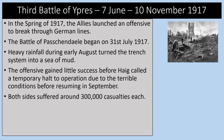The Third Battle of Ypres was from June to November 1917. In the spring of 1917 the Allies launched an offensive to break through German lines, and the Battle of Passchendaele began on the 31st of July 1917. The aim was to take the Germans from the high ridge surrounding Ypres. Heavy rainfall during early August turned the trench system into a sea of mud. The offensive gained little success before Haig called a temporary halt due to terrible conditions, before resuming in September. Both sides suffered enormous casualties, probably around 300,000 each.